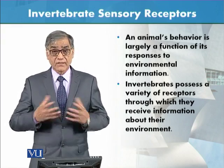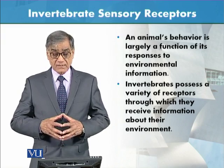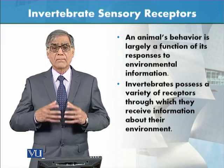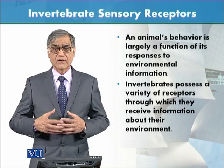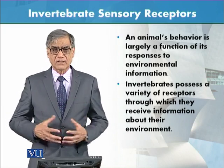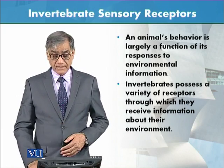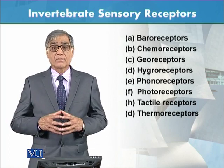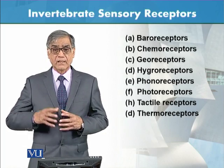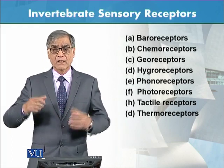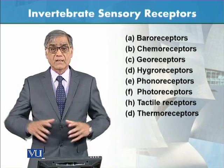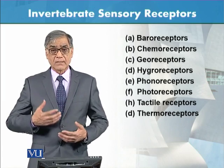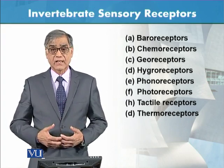Invertebrates possess a variety of receptors through which they receive information about their environment. There is a long list of these receptors. First, there is the baroreceptor — that is, pressure, air pressure. How does the animal respond in low air pressure conditions, or in high air pressure conditions? These baroreceptors receive the stimuli of pressure.